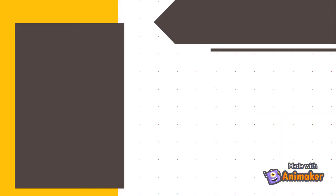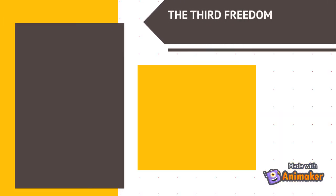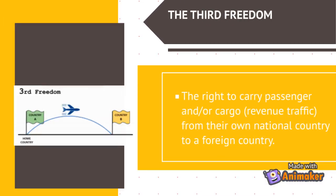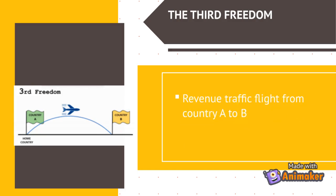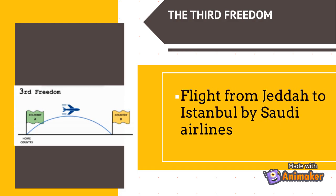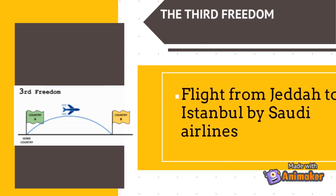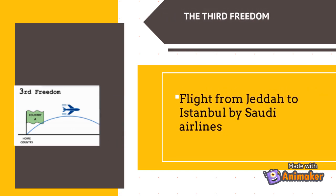The third freedom is the right to carry passengers and/or cargo — revenue traffic — from their own national country to a foreign country. In other words, carrying revenue traffic from country A to country B. For example, a flight from Jeddah to Istanbul by Saudi Airlines.